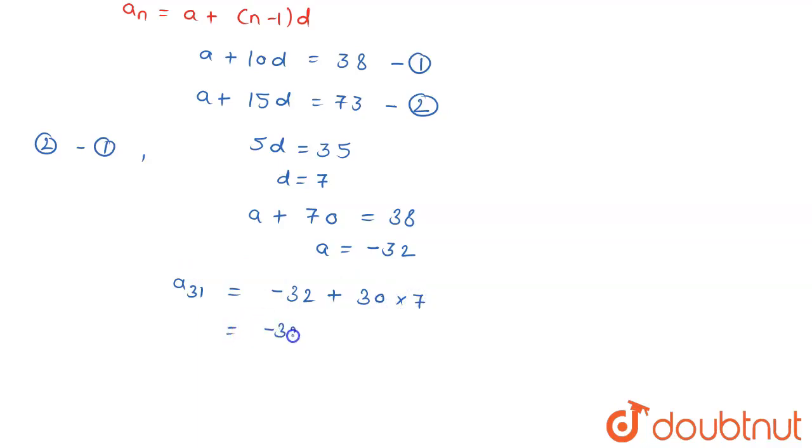This is minus 32 plus 210, or you can say that the value of your 31st term is equal to 178. And this is our final solution.